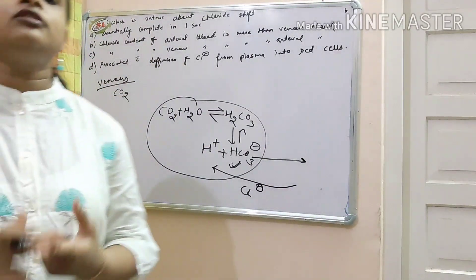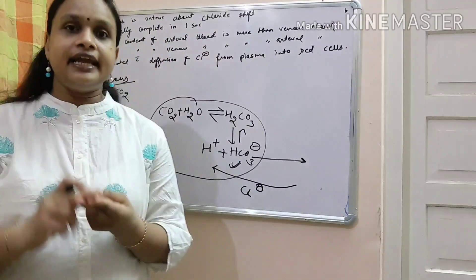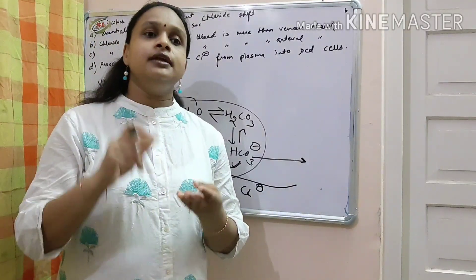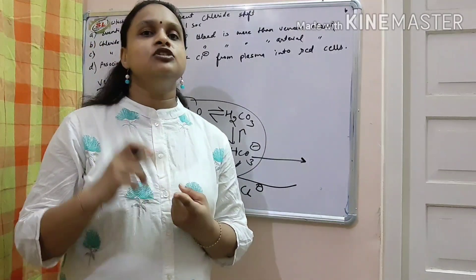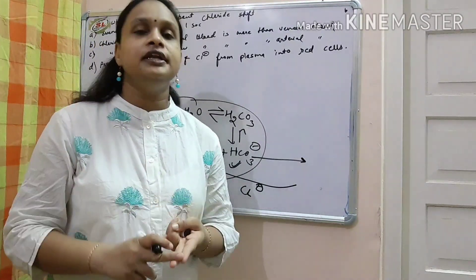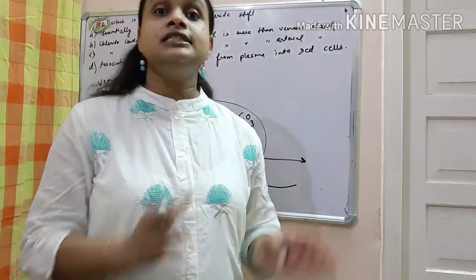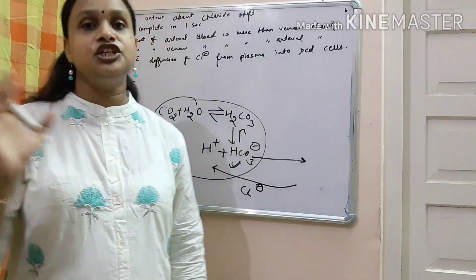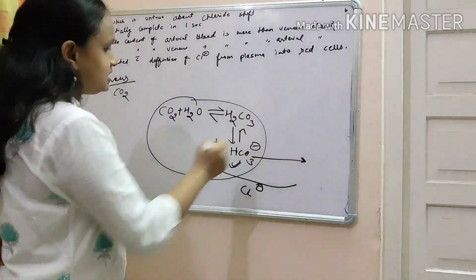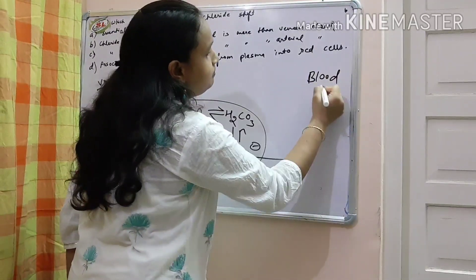But whenever we talk about the concentration of any ion, we take this value in the plasma. So whenever we talk about blood calcium or serum calcium level or sodium level or potassium level or chloride level, we are talking about extracellular fluid. We are not talking about intracellular concentration of these ions. So in this reaction, chloride is continuously decreasing in blood.